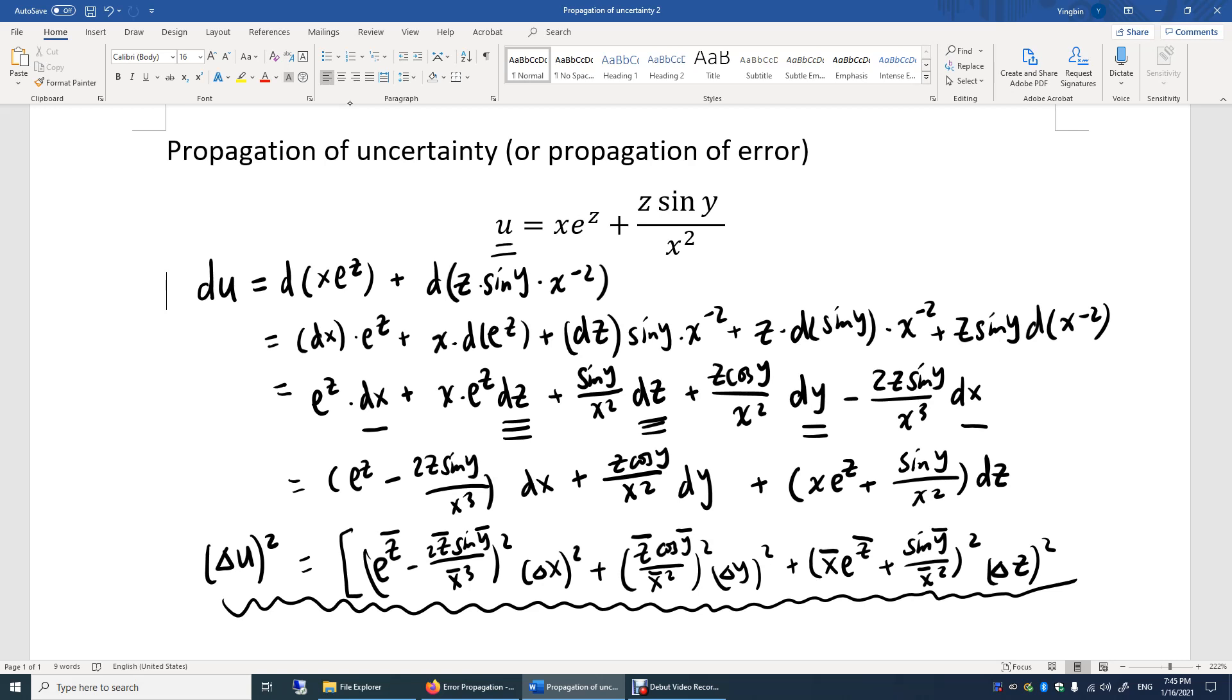The second assumption is that the average value of z, the average value of x, and the average value of y are very close to the actual values of z, of x, and of y.